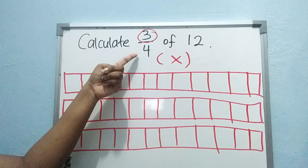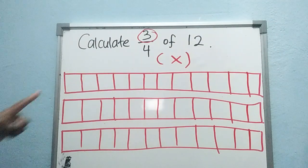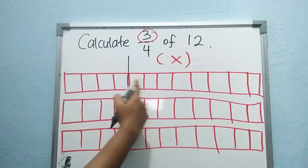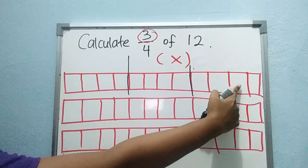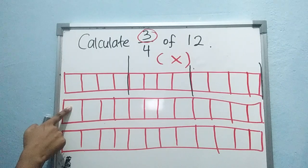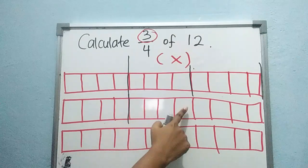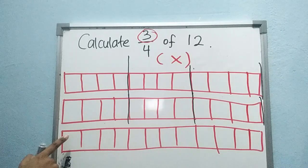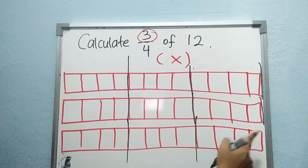Now look at this number — you have 4. What you must do is count 4 boxes and then cut. Since you have 4, just count 4 boxes: 1, 2, 3, 4 — cut. Then 1, 2, 3, 4 — cut. Continue doing this across all three long boxes, counting every 4 boxes and cutting, until all groups are marked. Do the same thing in each box. Done. Very simple.